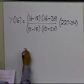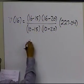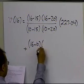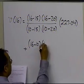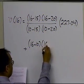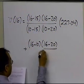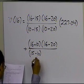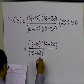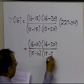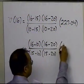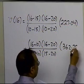So the second part is, again, (t minus t0), which is (16 minus 10), times (t minus t2), which is (16 minus 20), divided by (15 minus 10), which is (t1 minus t0), and then you have (t1 minus t2), which is (15 minus 20), times the velocity at t1, which is 362.78.